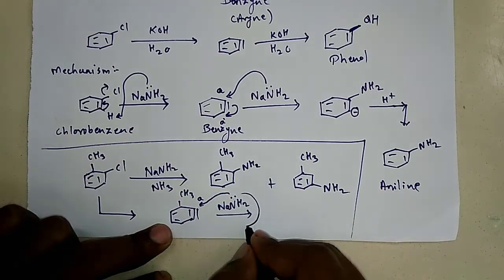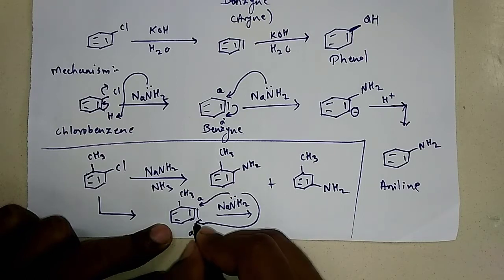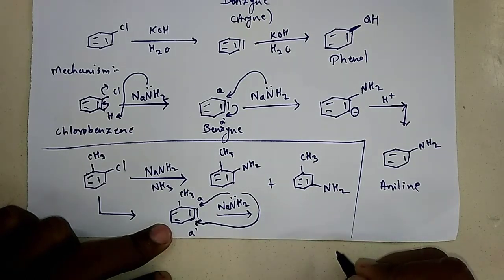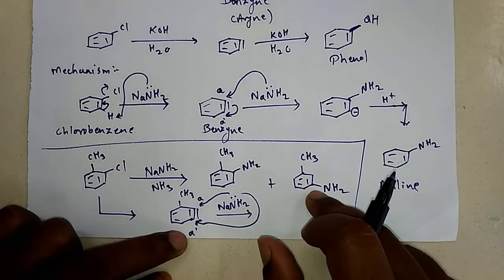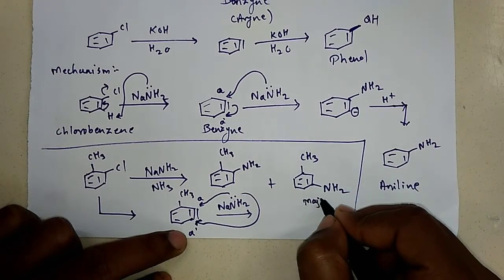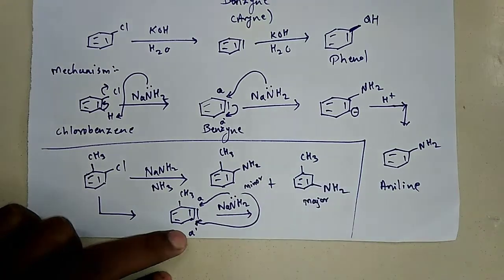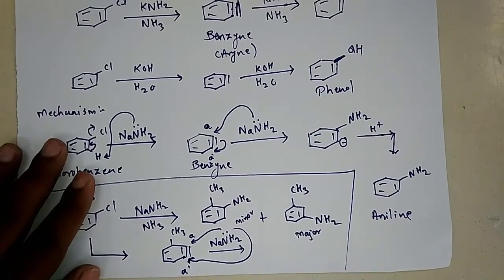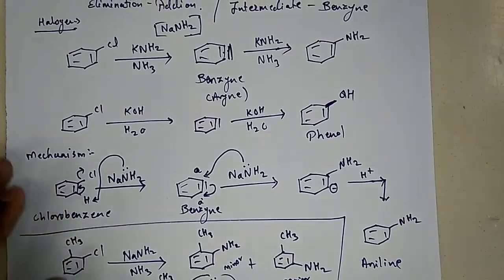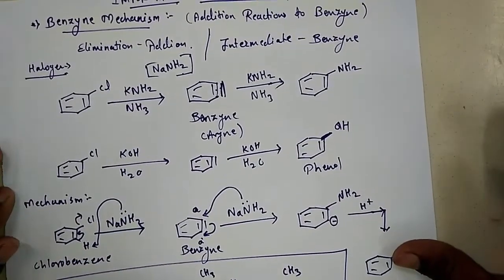And from A' position, the space is fully vacant, so it can attack more readily from the A' position. That means the meta product is going to be the major product, and the other product is going to be the minor one. So this is the addition reactions to the benzyne, which is known as the benzyne mechanism.